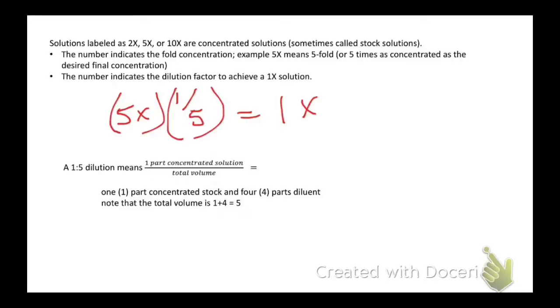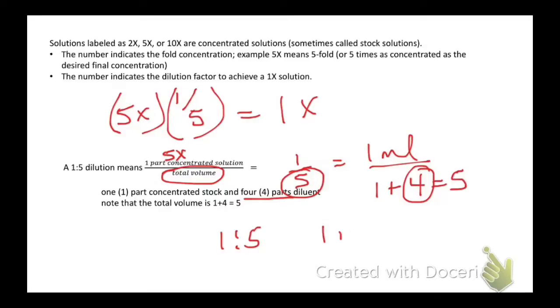A 1 to 5 dilution means one part concentrated solution, that would be our 5x solution, in a total volume of 5. So if we've got 1 over 5 that we need to dilute, and let's say we've got 1 mil, we need to figure out what we're going to dissolve it in. That turns out to be four parts, because our total volume is 1 plus something equals 5.